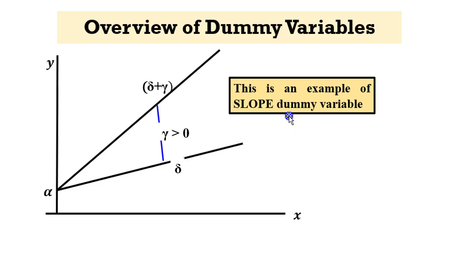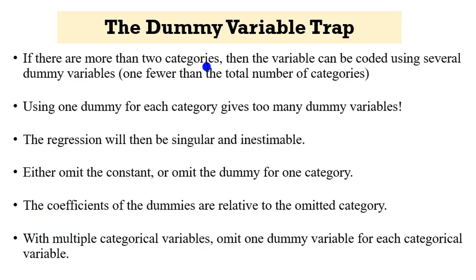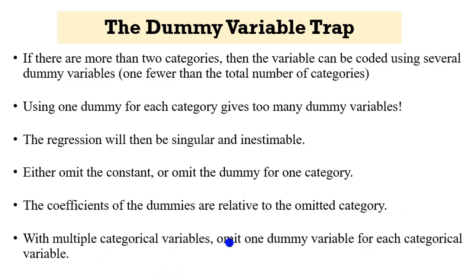This is an example of a slope dummy variable; what I showed before is an example of an intercept dummy variable. Now let's talk about the dummy variable trap. If there are more than two categories, the variable can be coded using several dummy variables, but you must have one fewer than the total number of categories. Using one dummy for each category will result in too many dummy variables, making the regression singular and inestimable. Stata will typically drop one of the variables. You can either omit the constant or omit the dummy for one category. The coefficients of the dummies are relative to the omitted category during interpretation. With multiple categorical variables, make sure you omit one dummy variable for each categorical variable.